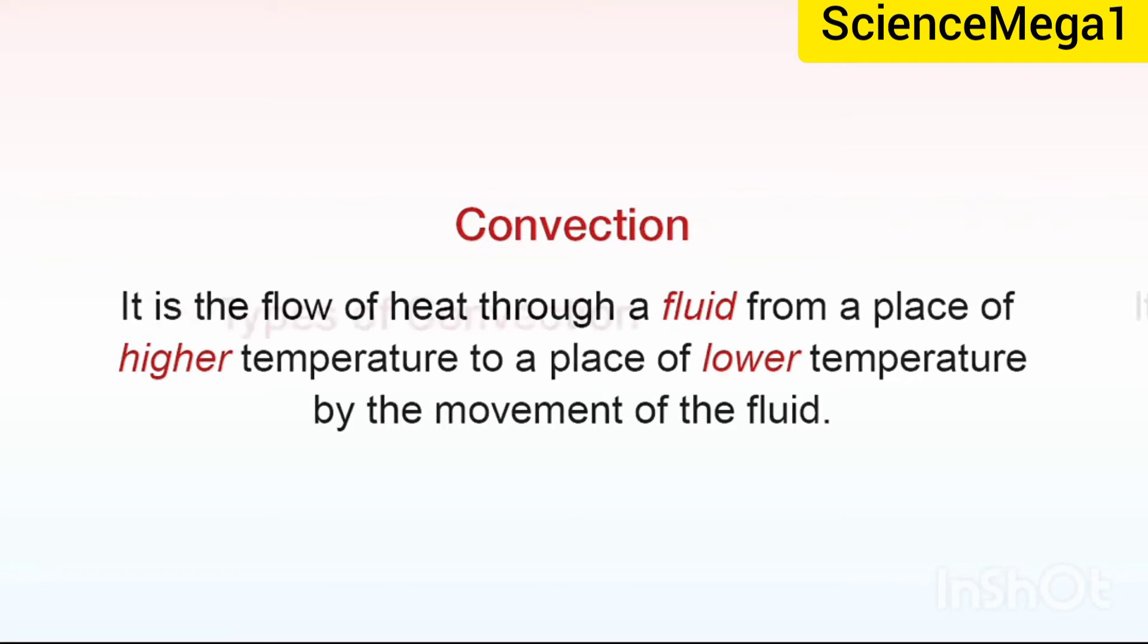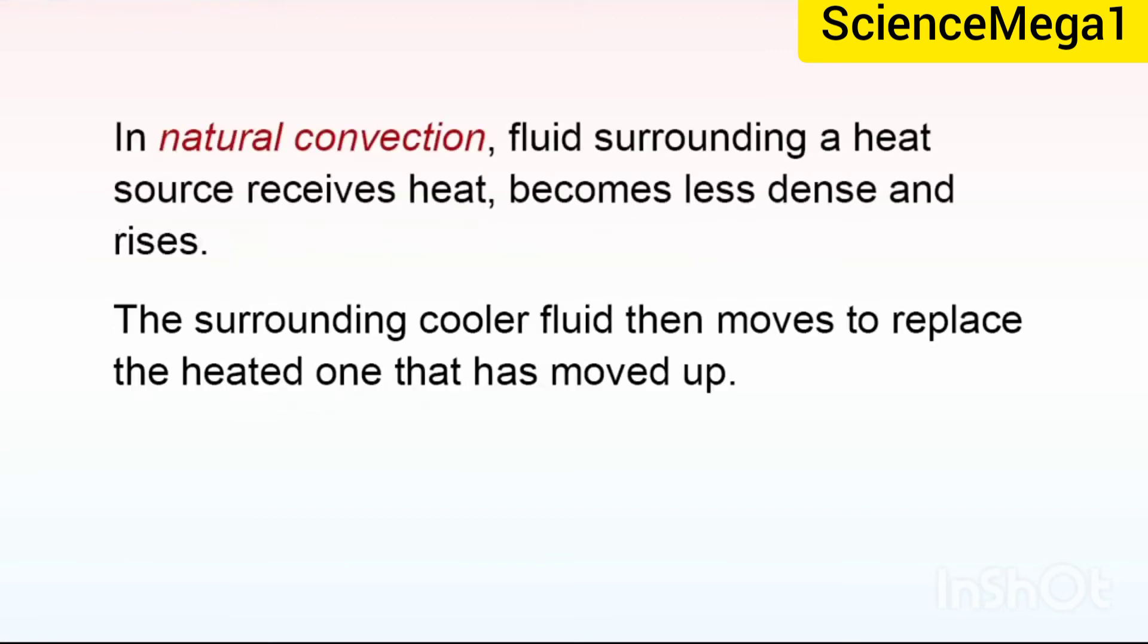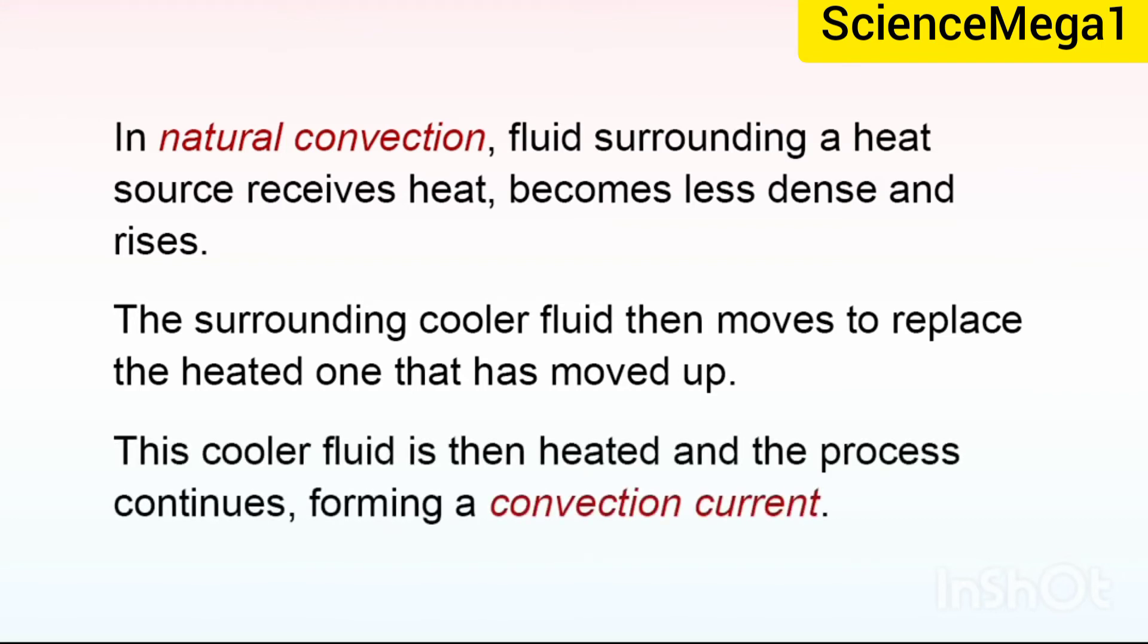Let's now turn our attention to types of convection. Convection occurs in two forms, that is the natural convection and the forced convection. In natural convection, fluid surrounding a heat source receives heat, becomes less dense and rises. The surrounding cooler fluid then moves to replace the heated one that has moved up. This cooler fluid is then heated and the process continues forming a convection current.